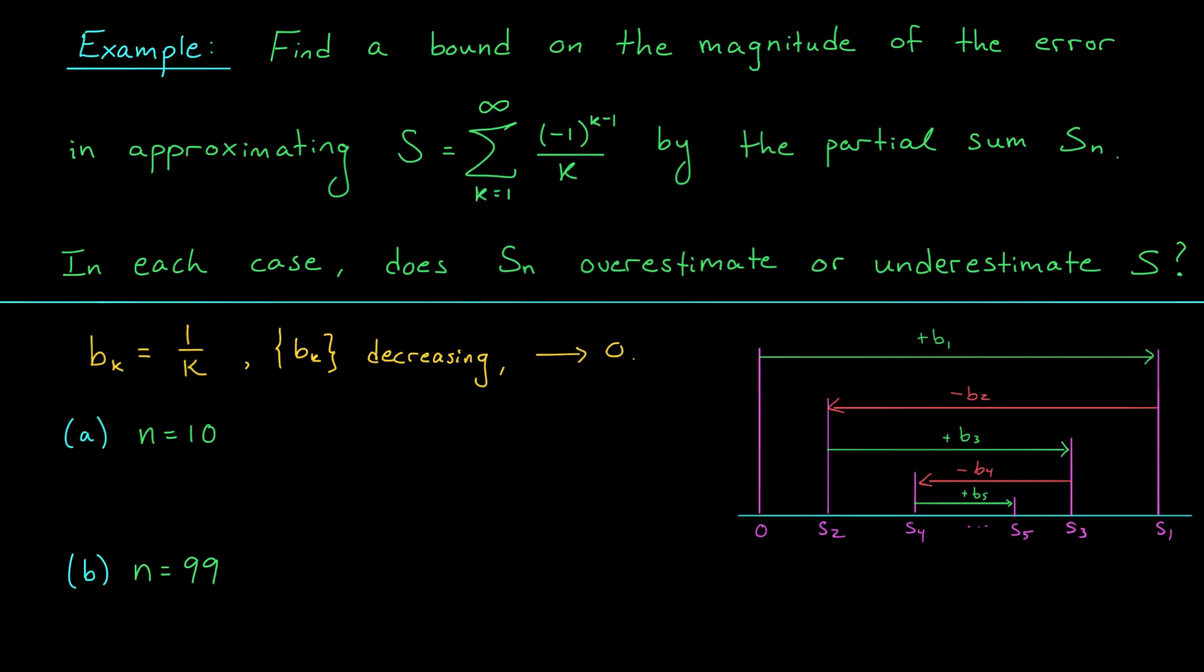For part A, we want to estimate the error when approximating S using the sum of the first 10 terms. Well, according to the ASET, the error will be less than bn plus 1, the absolute value of the first term that's not included in our sum. So here, the absolute value of S minus S10, the magnitude of our error, will be less than b11, which is 1 over 11.